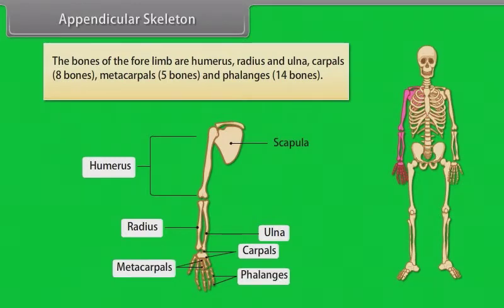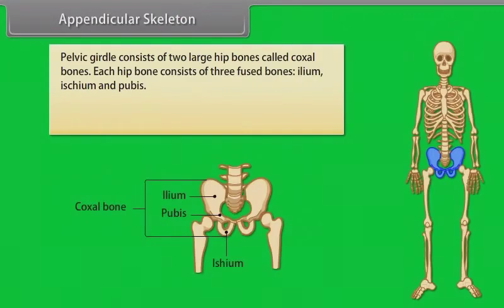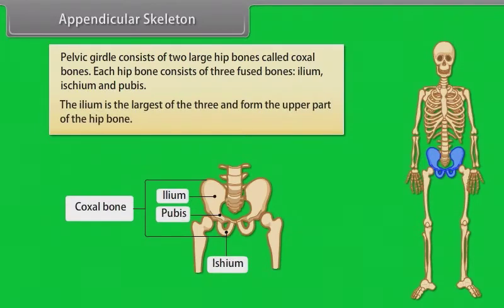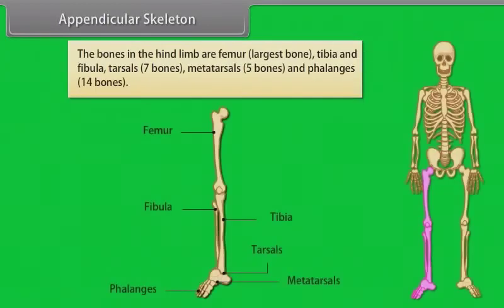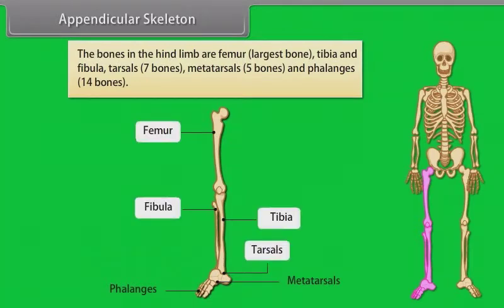The pelvic girdle consists of two large hip bones called coxal bones. Each hip bone consists of three fused bones: ilium, ischium, and pubis. The ilium is the largest of the three and forms the upper part of the hip bone. The bones in the hind limb are the femur (largest bone), tibia, fibula, tarsals (7 bones), metatarsals (5 bones), and phalanges (14 bones).